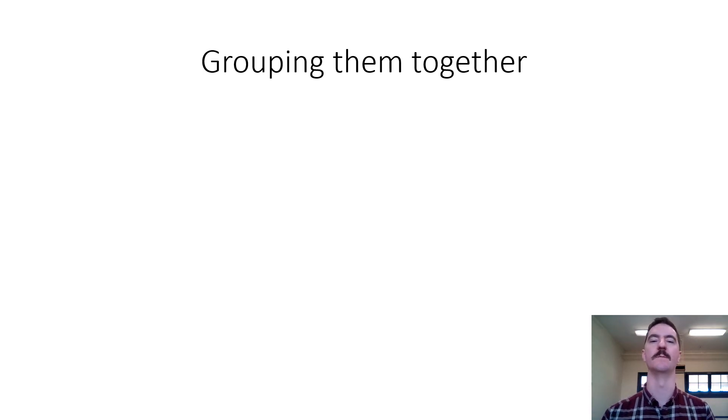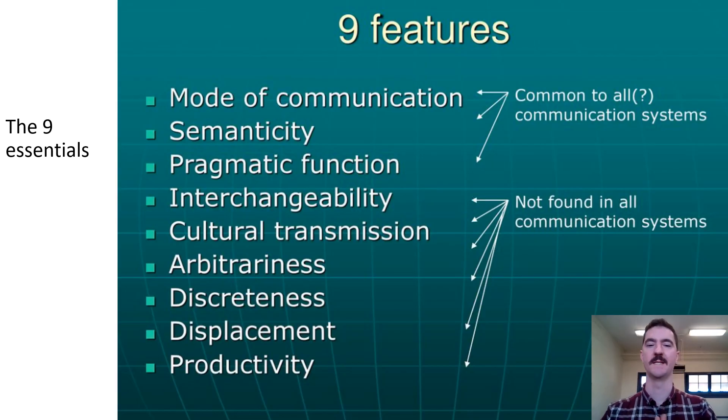Here's an example of nine features, what they've done is common to all communication systems and not found in all communication systems. This is something that you could do as well, one way of looking at it, but it's entirely up to you to create an appendix that outlines the 16 features with your notes on them and groups them in a way that makes sense to you.